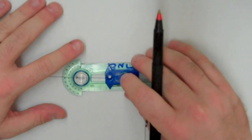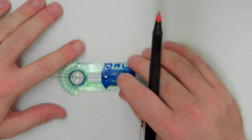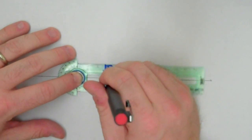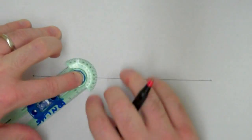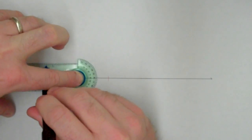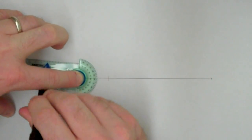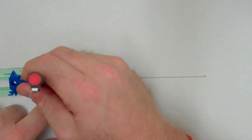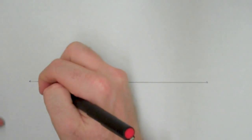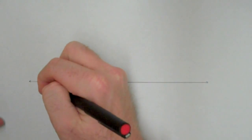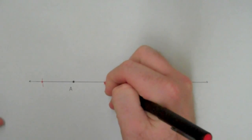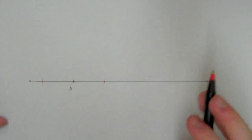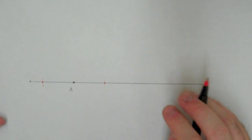I can create that segment very easily with my compass. Put the point of my compass on A, make a mark on one side, and without changing my compass, make the same mark on the other side. What I have created here is a segment such that A is the midpoint of that segment.